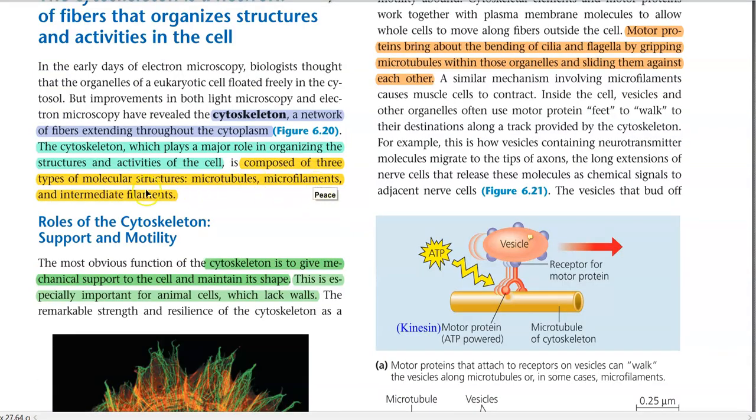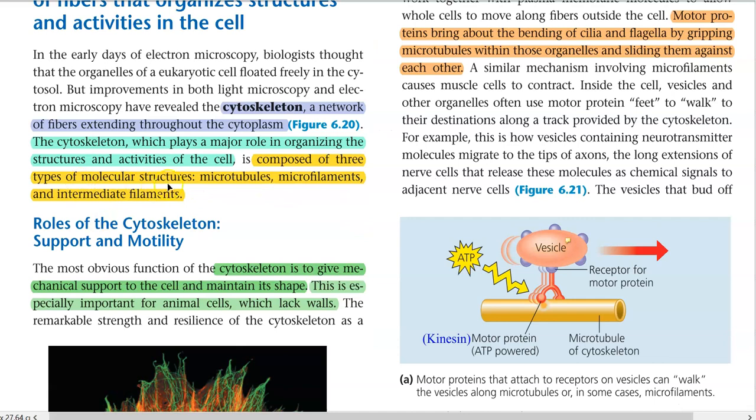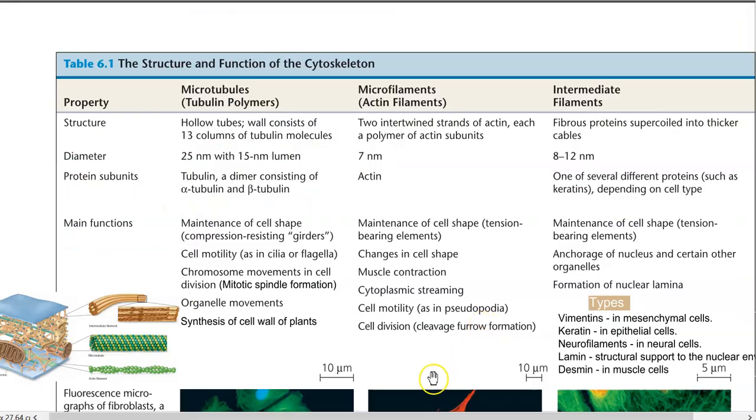The cytoskeleton is composed of three types of molecular structures that include microtubules, microfilaments, and intermediary filaments. The differences between these three components of cytoskeleton have been listed here.